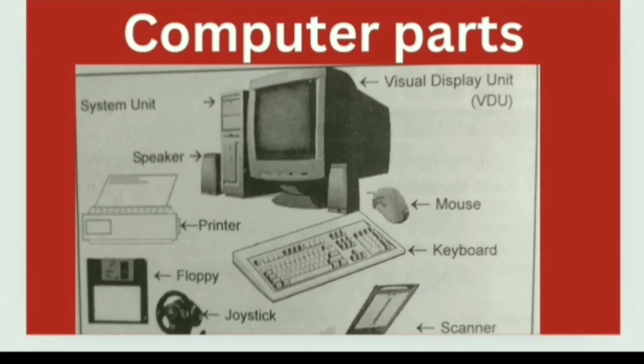Main computer parts: system unit, visual display unit, speaker, printer, floppy, joystick, mouse, keyboard, and scanner. These are the various parts of a computer.